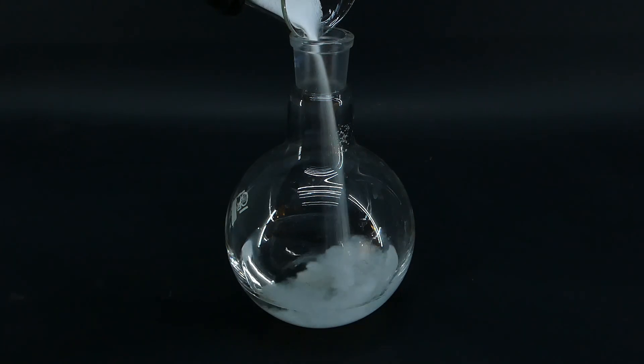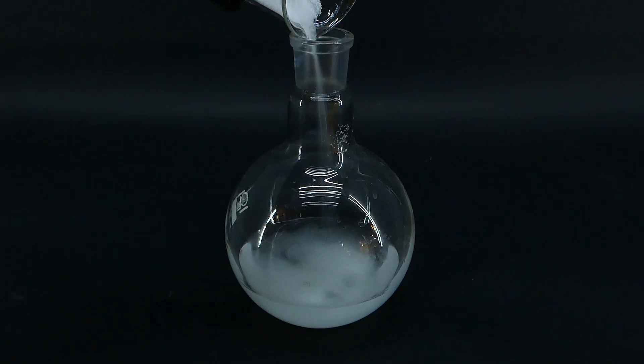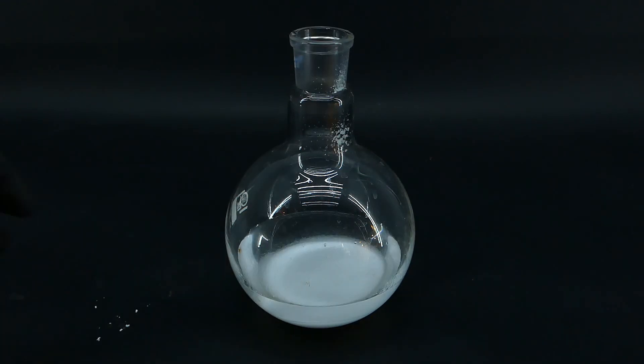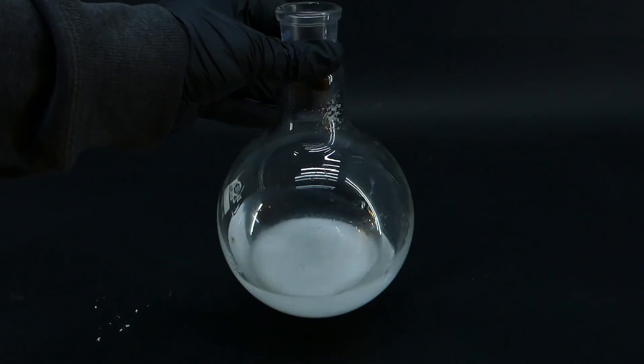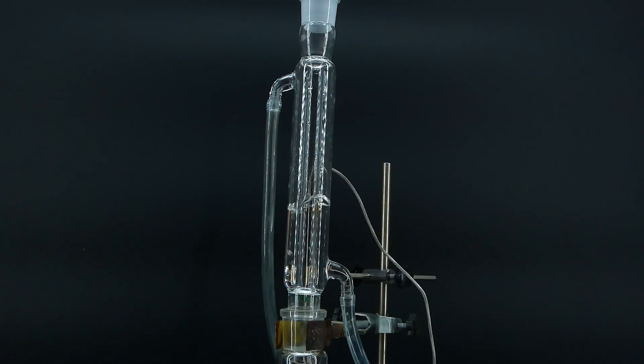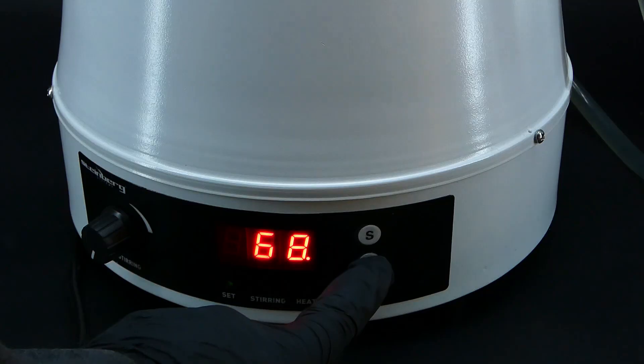After the addition of sulfuric acid, I poured in 62g of boric acid into the flask. After all of the boric acid has been added, I placed the flask in a heating mantle, put a condenser on top of it, and started heating the mixture.